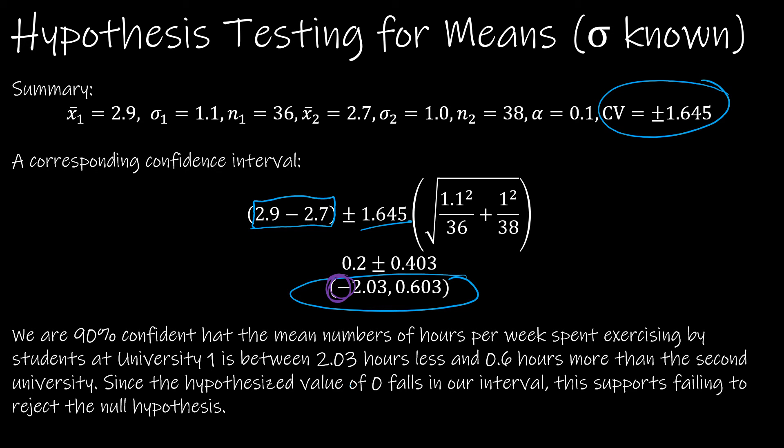So I want you to notice, even though this value is negative, I didn't put the negative in my sentence. I said 2.3 hours less to 0.6 hours more than the second university. And then I talk about the hypothesized value. Since the hypothesized value of zero falls in our interval, this supports failing to reject the null.